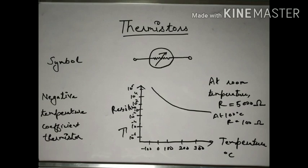The negative temperature coefficient thermistor graph is plotted here. One axis is resistance and the other is temperature. You can see that as temperature increases, resistance is decreasing. At room temperature, the resistance is 5,000 ohms, and as you reach 100 degrees Celsius, the resistance will be 100 ohms. You can see the difference here — how much it is dependent upon the temperature.